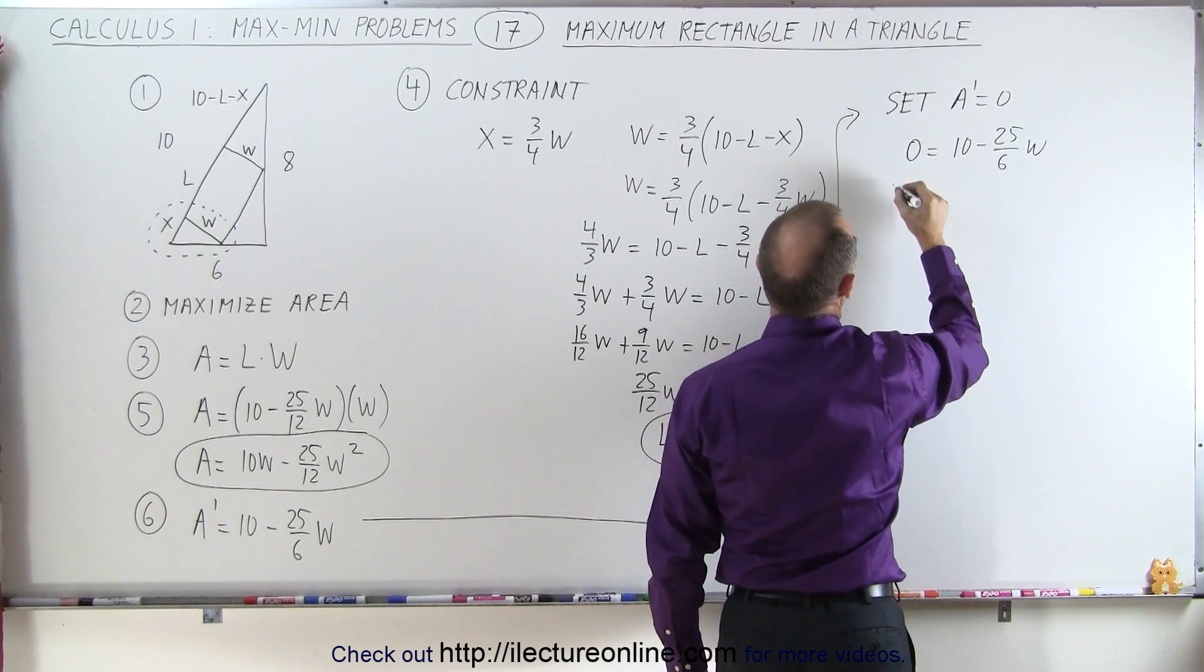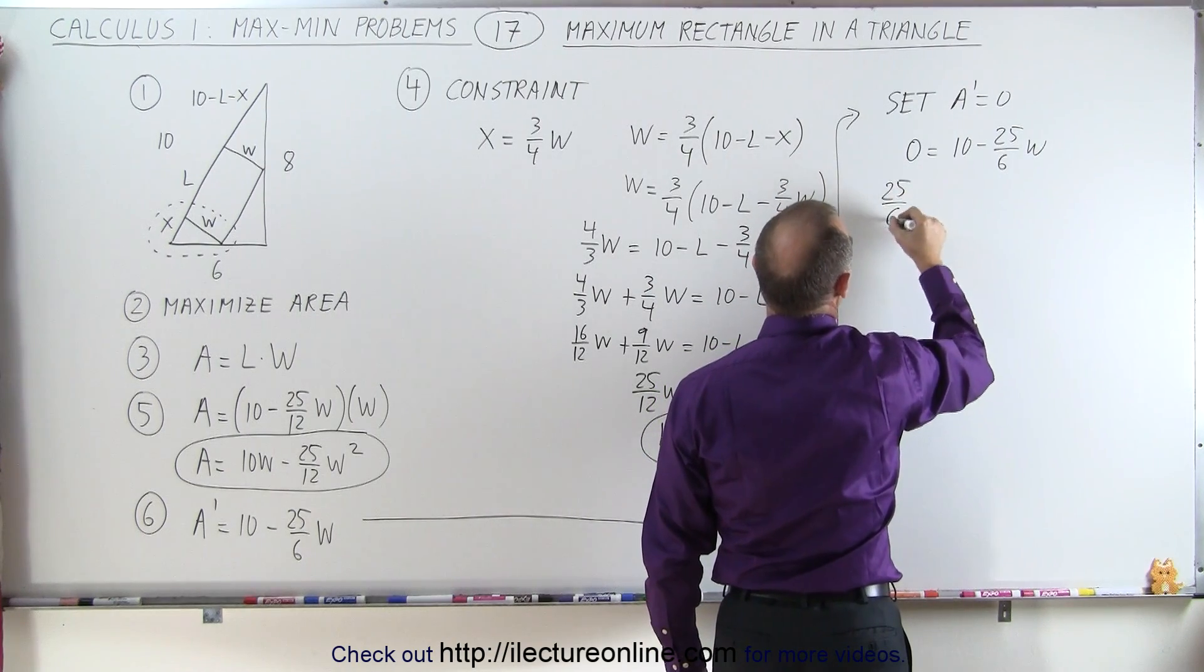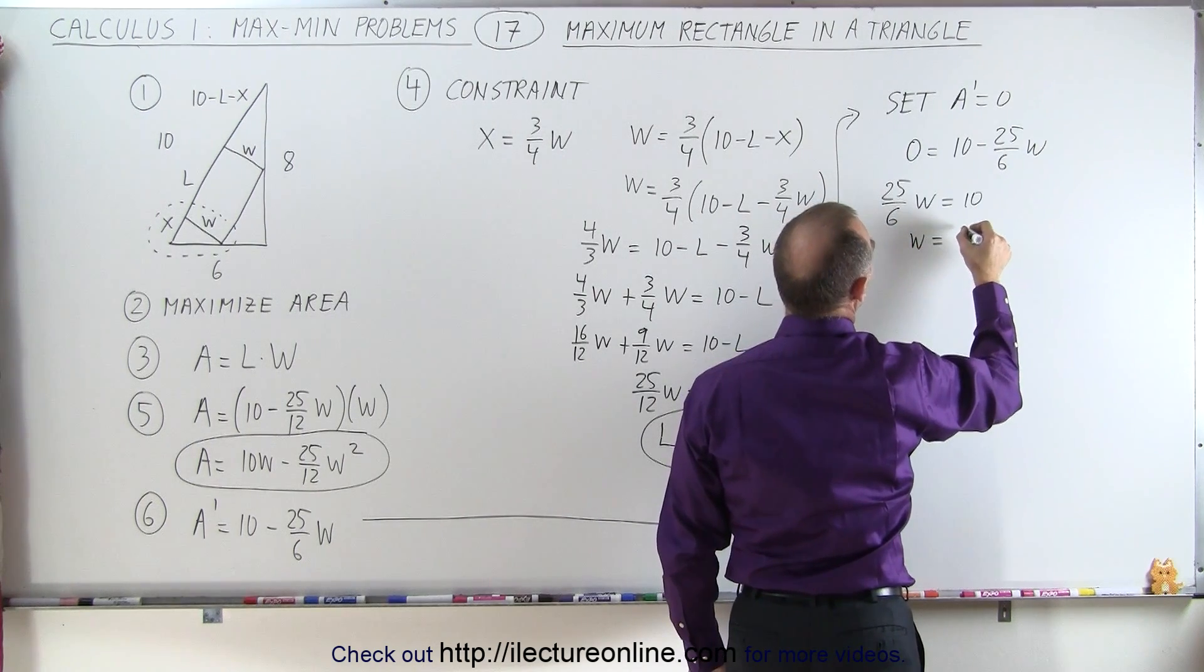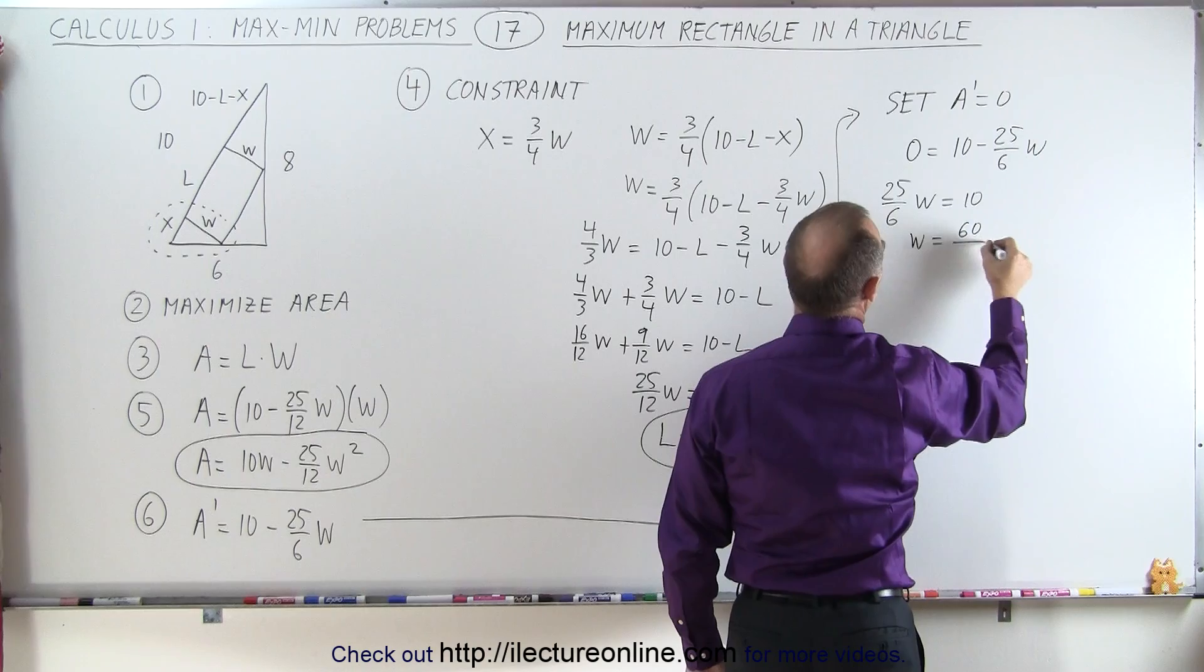Moving this to the other side, I can say that 25 over 6 W equals 10. Or W is equal to 60 divided by 25.